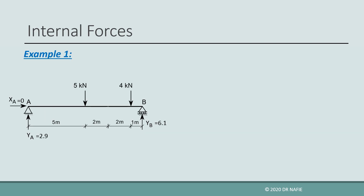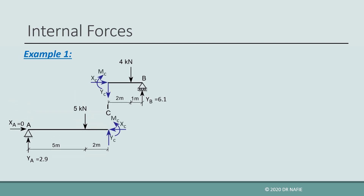Let us look at an example. For the shown beam, it is required to evaluate the internal forces at point C. The beam is subjected to two concentrated forces acting inside the span. To reach equilibrium, appropriate reactions must be generated at the end supports as shown. The reactions are evaluated using the equilibrium equations as explained in the previous lecture. Because the effect of the acting forces should be transferred from their point of action to the ends of the beam where they are resisted, internal forces are generated inside the beam.